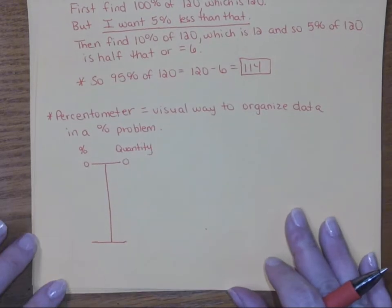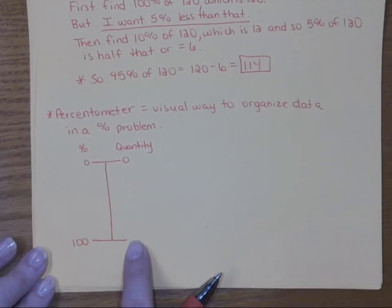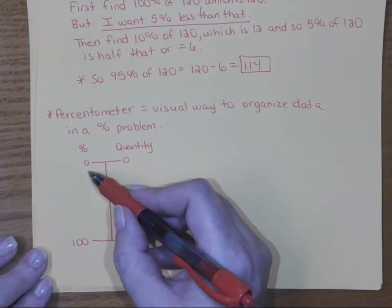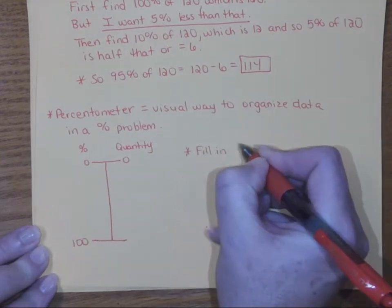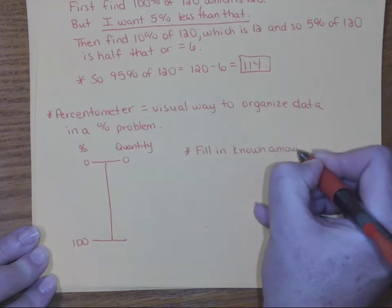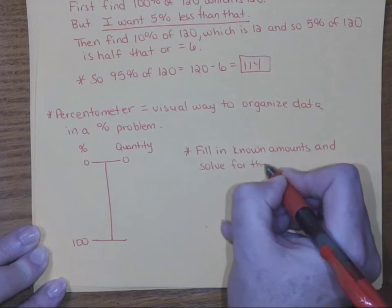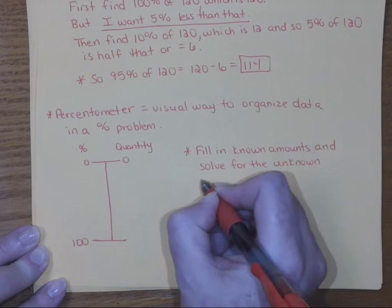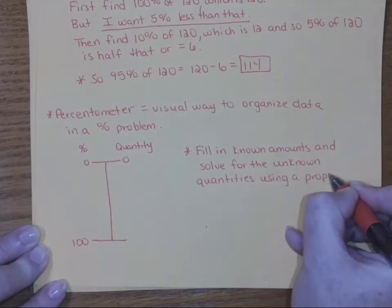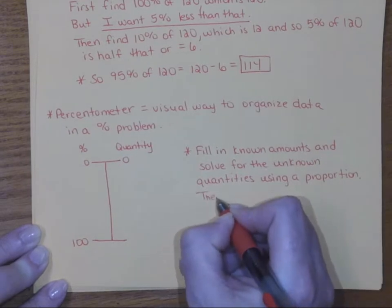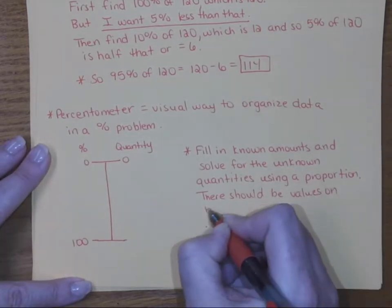The percentometer starts at the top and literally looks like a measurement gauge — maybe like a thermometer, which is why it's called a percentometer. The percentages go on the left and whatever quantity you're trying to find goes on the right. We start at zero in both cases: zero quantity equals zero percent, going up to 100%. Values closer to zero percent show up higher than values closer to 100%. You fill in the known amounts and solve for unknown quantities using proportions.